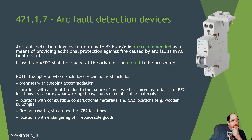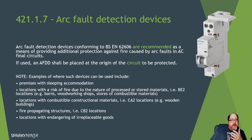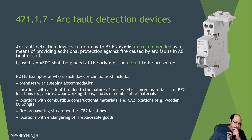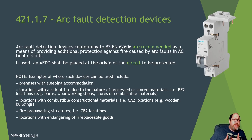In chapter 42, covering protection against thermal effects, they've reintroduced a mention of the arc fault detection device (AFDD) — it kind of disappeared before the 17th edition but it's back in the 18th. Do your own research on these devices: they monitor currents and can pick up transients from arcing and disconnect. The regulations recommend them for places of sleeping accommodation or where there's a risk of fire due to the nature of processes or stored materials — similar locations where wiring systems could propagate fire.